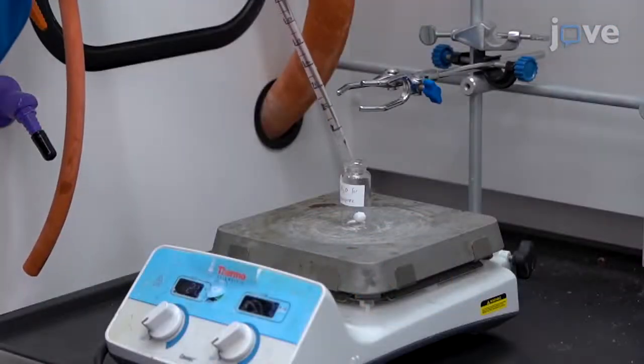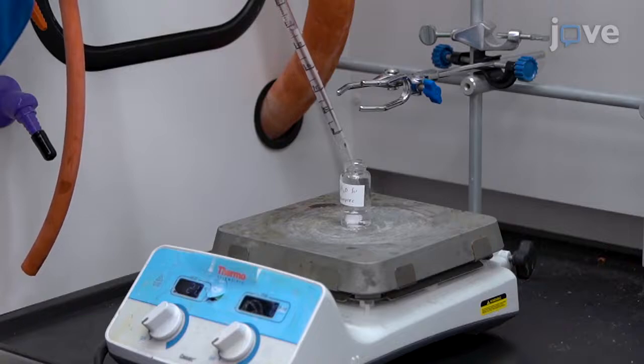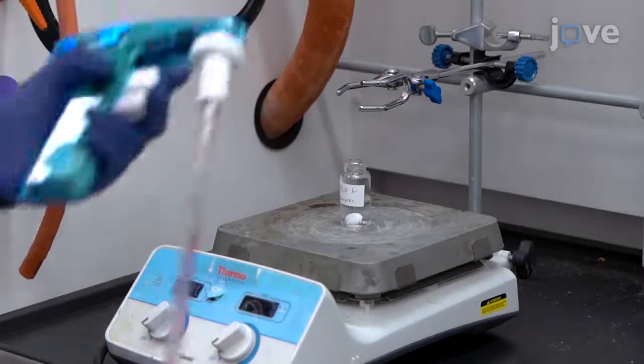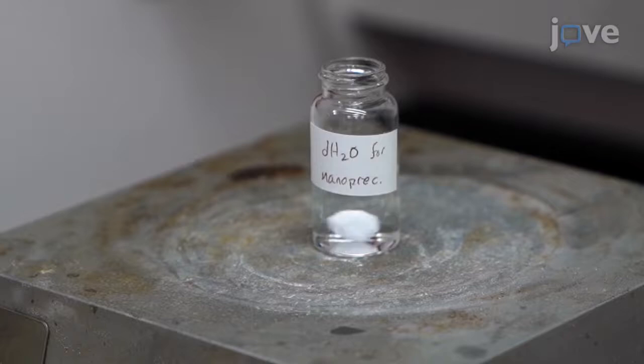Next, add 10 mL of ultrapure water to a 20 mL glass scintillation vial with a small stir bar and place the vial on a stir plate set to 600 rpm.